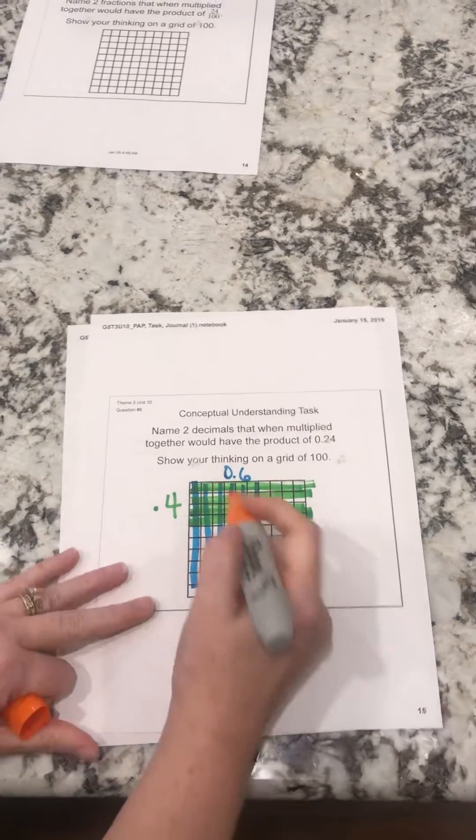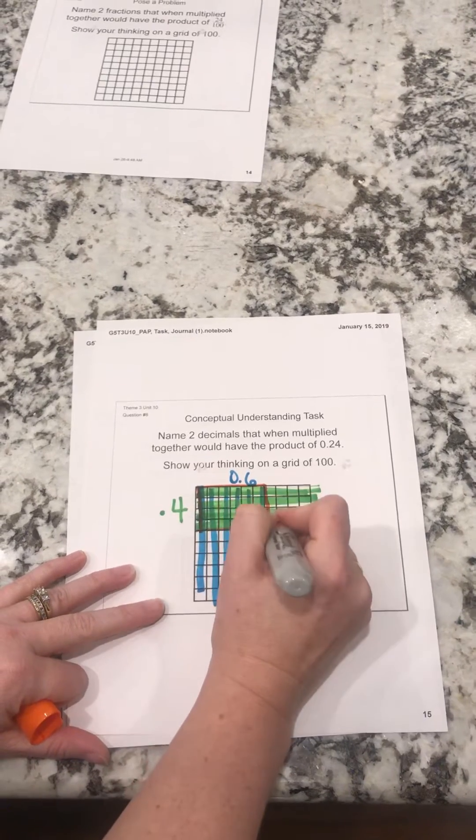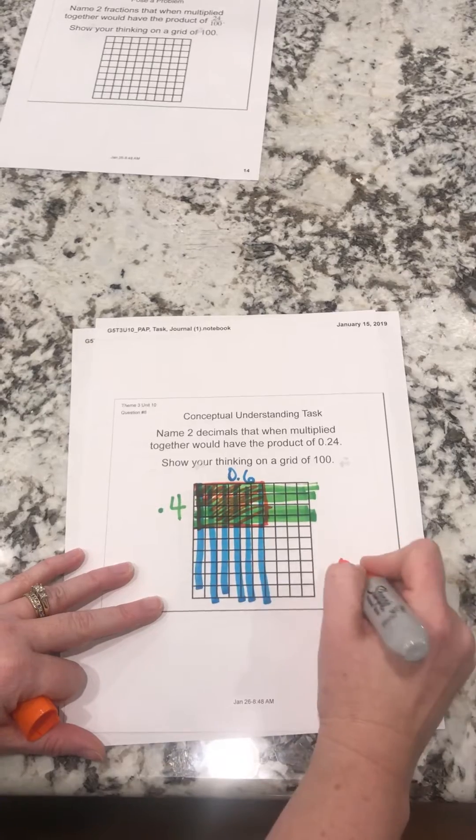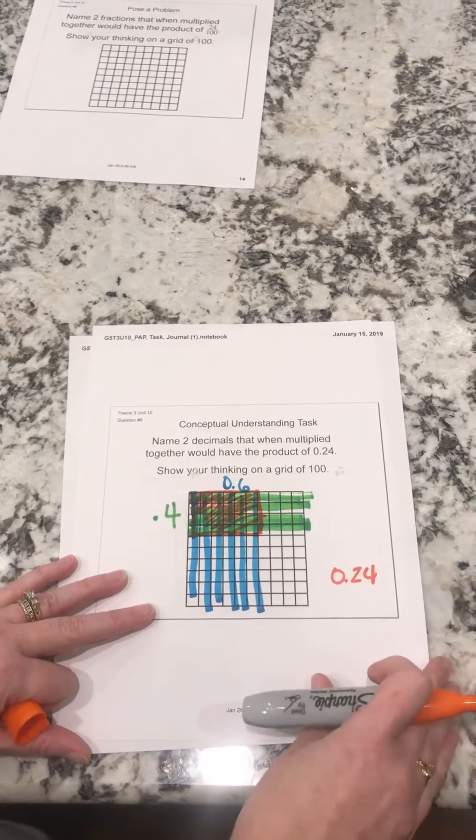And I'm going to see, just like I did with the fractions, this amount, this area of the two combined. So I can see 24 hundredths.